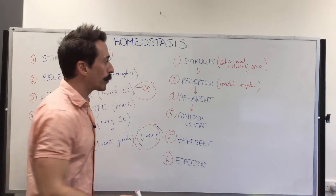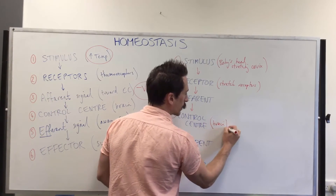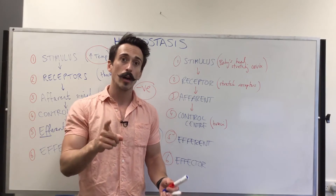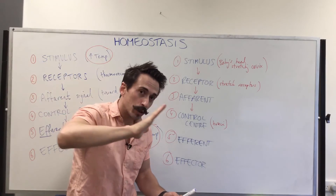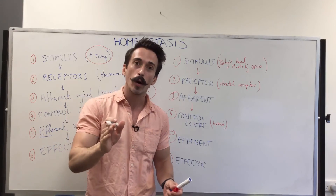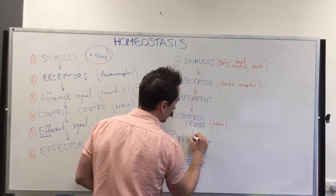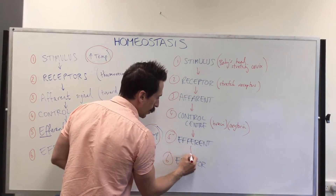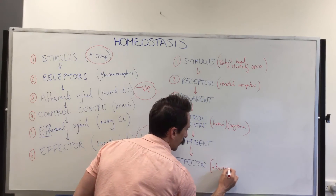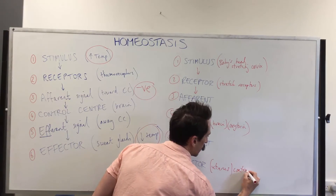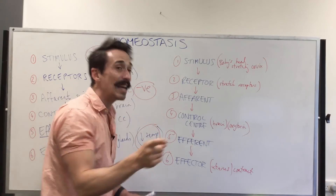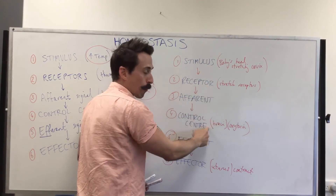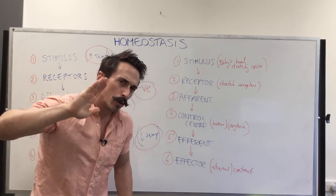The stretch receptors send this signal via an afferent signal to the control center — the brain, specifically the hypothalamus. The brain says the cervix is stretching, something needs to come out — probably a baby. How do we help? We need to contract the uterus. It releases oxytocin, a hormone from the posterior pituitary gland, through an efferent signal. The efferent signal — oxytocin floating through the bloodstream — goes to the effector, being the uterus, which contracts. If the uterus contracts and pushes the baby, the baby's head will continue to stretch the cervix, amplifying the initial stimulus, which then continues to lead through: stretch receptors, brain releasing oxytocin, more uterine contractions, baby gets pushed out a little bit more, leading to more stretching.